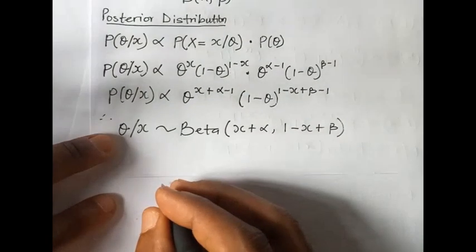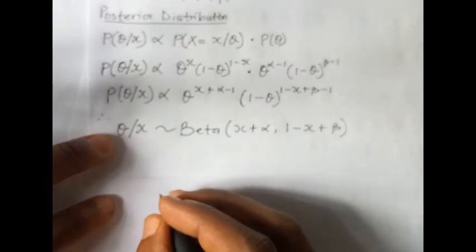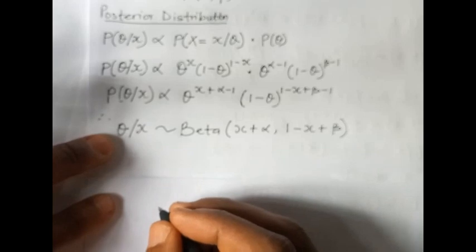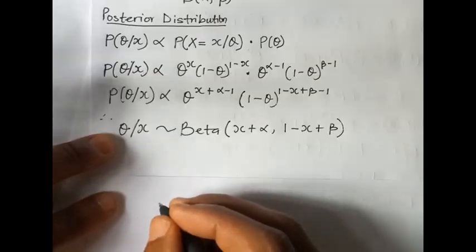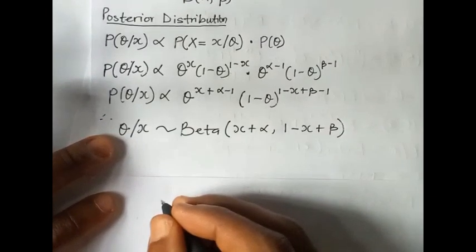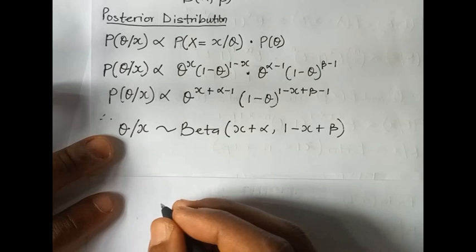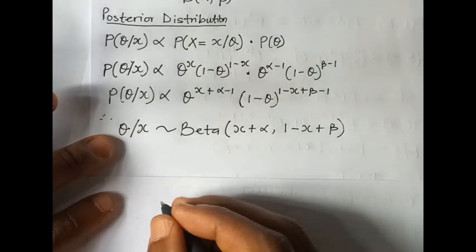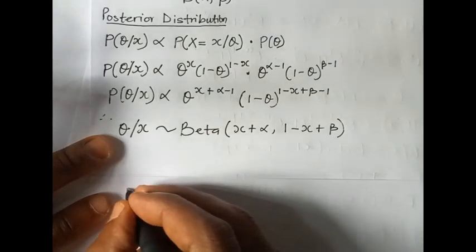The Bayes estimator for theta under the squared error loss function is the mean of the posterior distribution. For a beta distribution, we need to compute the mean.